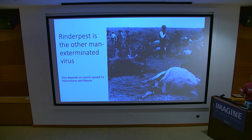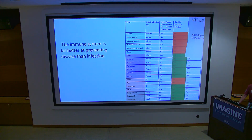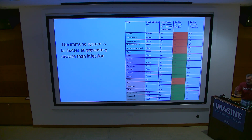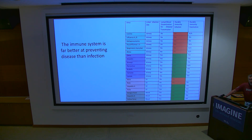Rinderpest, the other man-exterminated animal virus, also depends on viremic spread for transmission and disease. Going through the textbooks, you take all the most common human pathogens including coronavirus, and what you find is that for reinfection nothing is durable. What is durable is preventing disease, and in every case disease is based on blood or lymph dissemination.